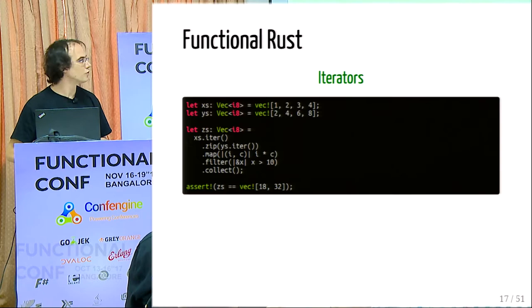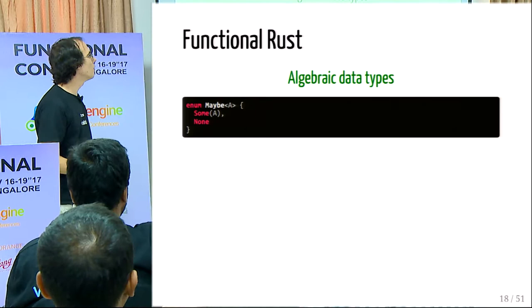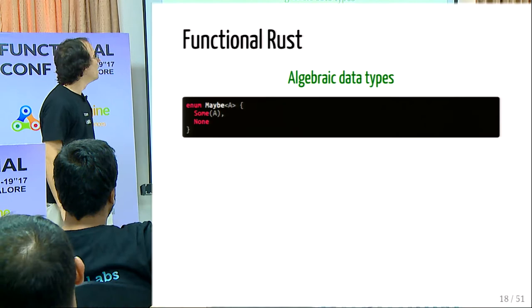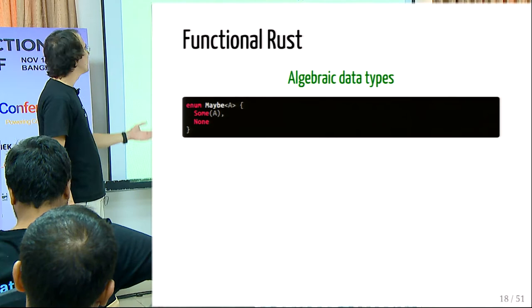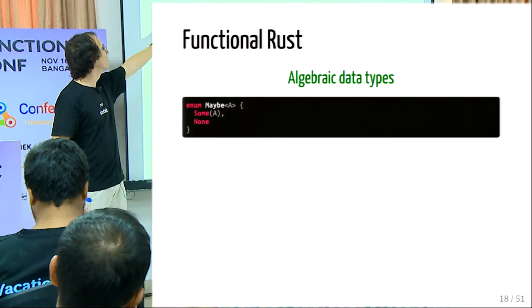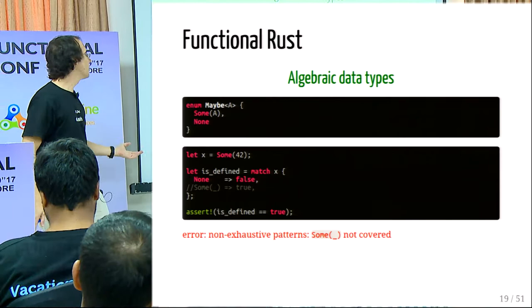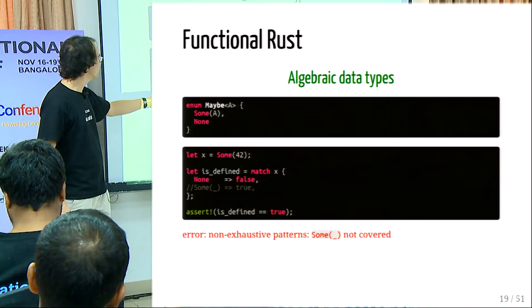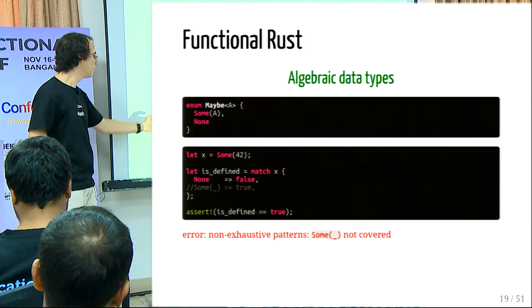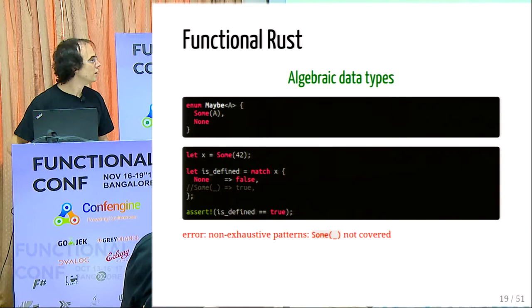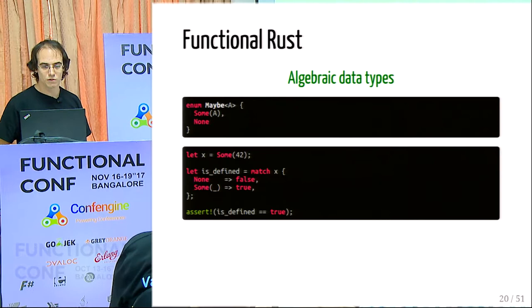Another core functional feature is algebraic data types. Here's a simple example encoding `Maybe` as in Haskell — it's called `enum` in Rust. You define your type with a type parameter and give the type constructors. You use them with pattern matching: you match on the value and provide cases. If you forget one case, you get a compilation error. This is extremely useful for writing safe applications.